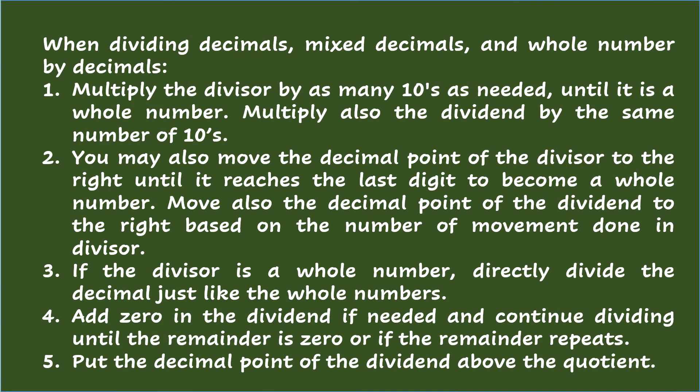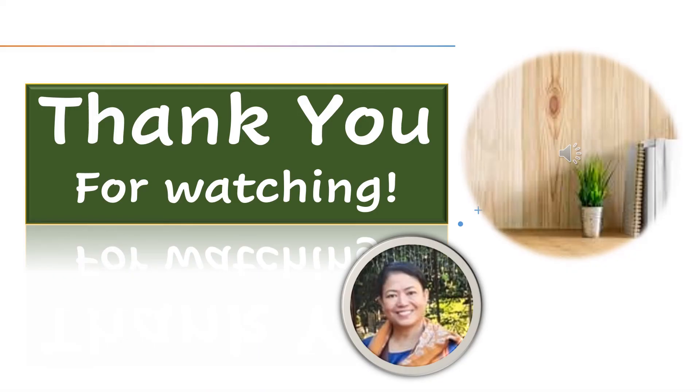When dividing decimals, mixed decimals, and whole numbers by decimals, multiply the divisor by as many tens as needed until it is a whole number, and multiply also the dividend by the same number of tens. You may also move the decimal point of the divisor to the right until it reaches the last digit to become a whole number, then move also the decimal point of the dividend the same number of places. If the divisor is a whole number, directly divide the decimal just like whole numbers. Add zero in the dividend if needed and continue dividing until the remainder is zero or if the remainder repeats. Put the decimal point of the dividend above the quotient.